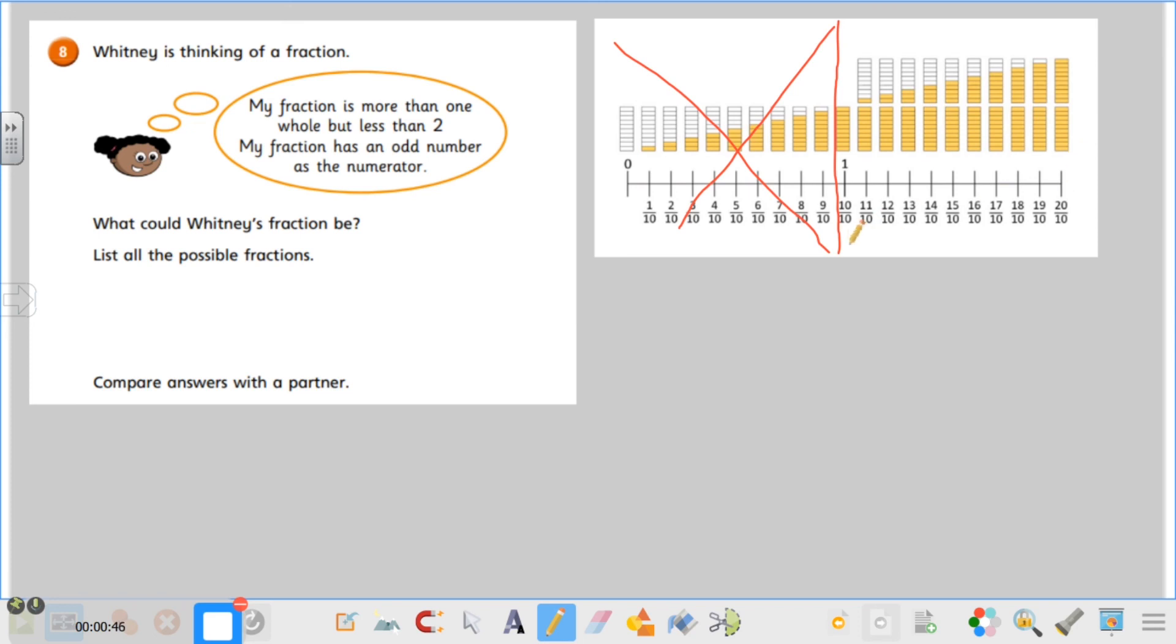Basically we've got here to look at. My fraction has an odd number as the numerator, so that's the top number. So now we can cancel out any even, or actually we could just circle any odd numbers. So we've got 11, 11, 13, 15, 15, 15, 17, or 19. So the only possible ones that it could be are the ones that I have circled. These are the only ones that have an odd number as the numerator. They are more than one whole but less than two, so there's only 1, 2, 3, 4, 5, five possible answers.